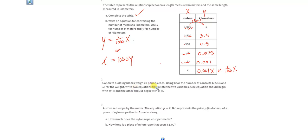Concrete building blocks weigh 28 pounds each. Using B for the number of concrete blocks and W for the weight, write two equations that relate the two variables. One should begin with W equals, and the other one should begin with B equals.